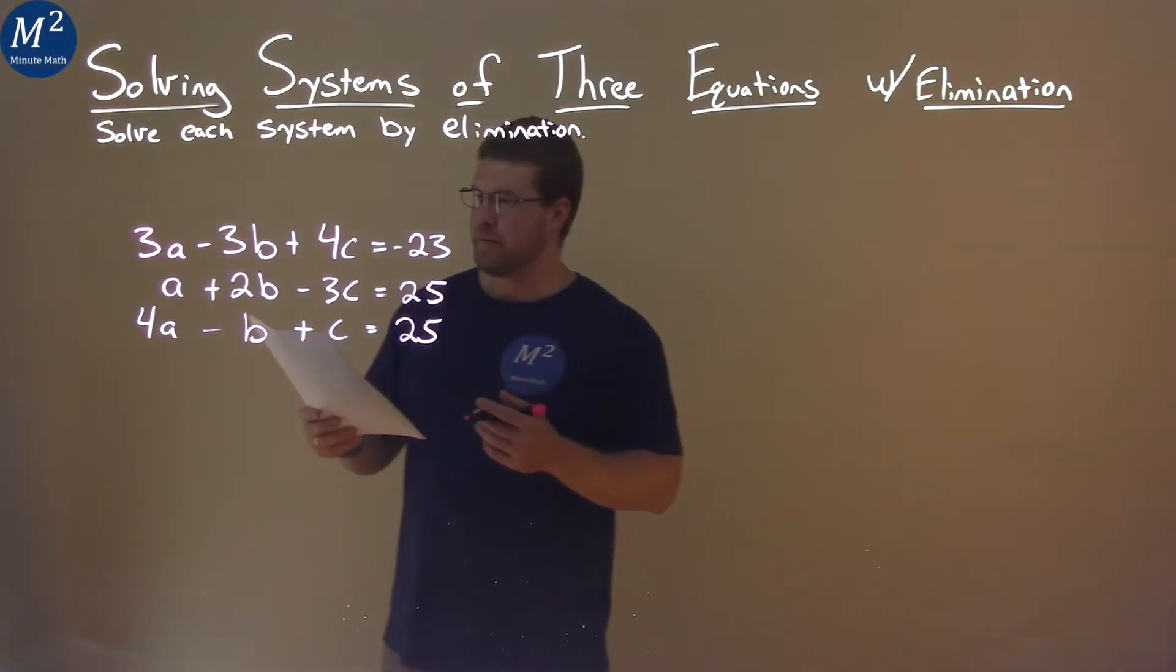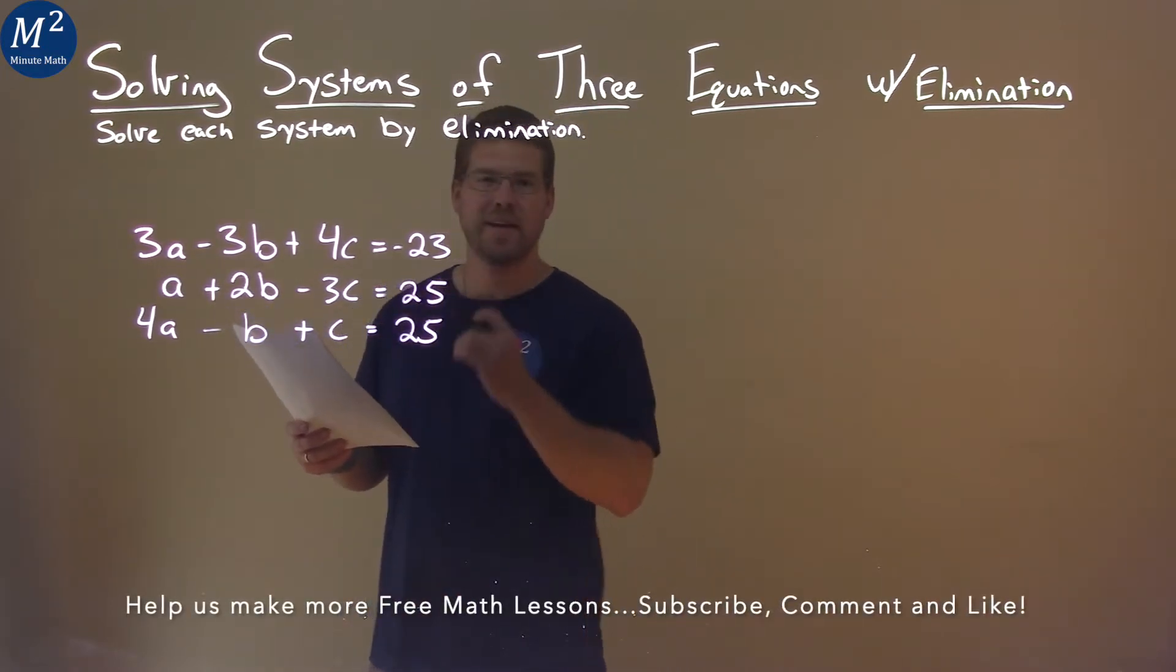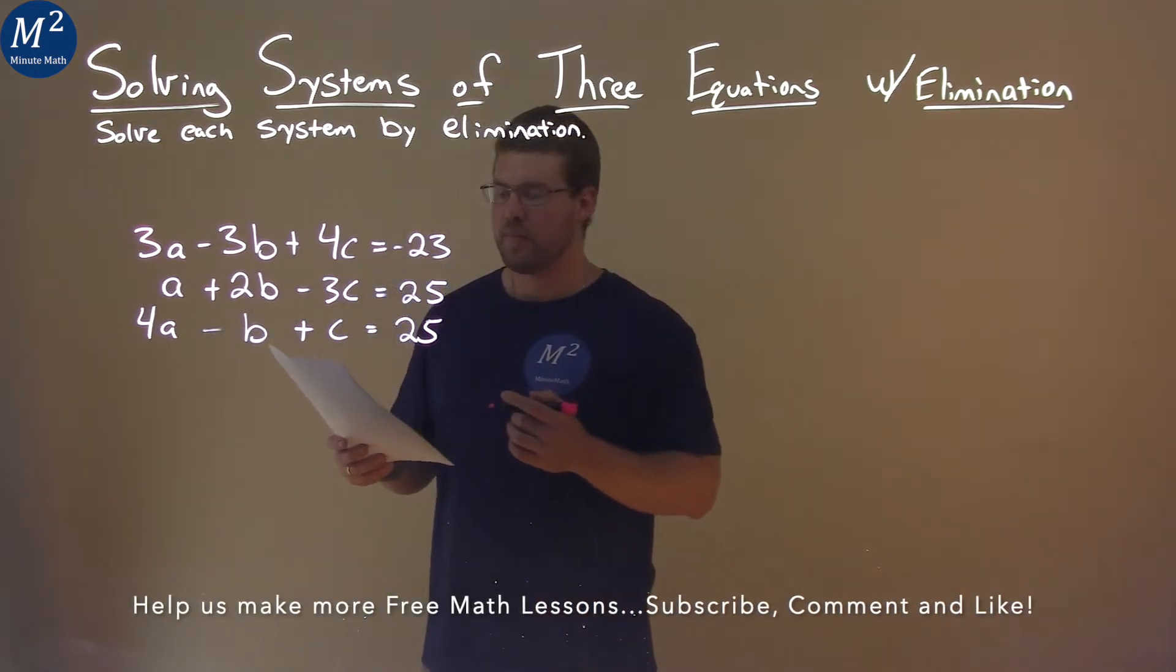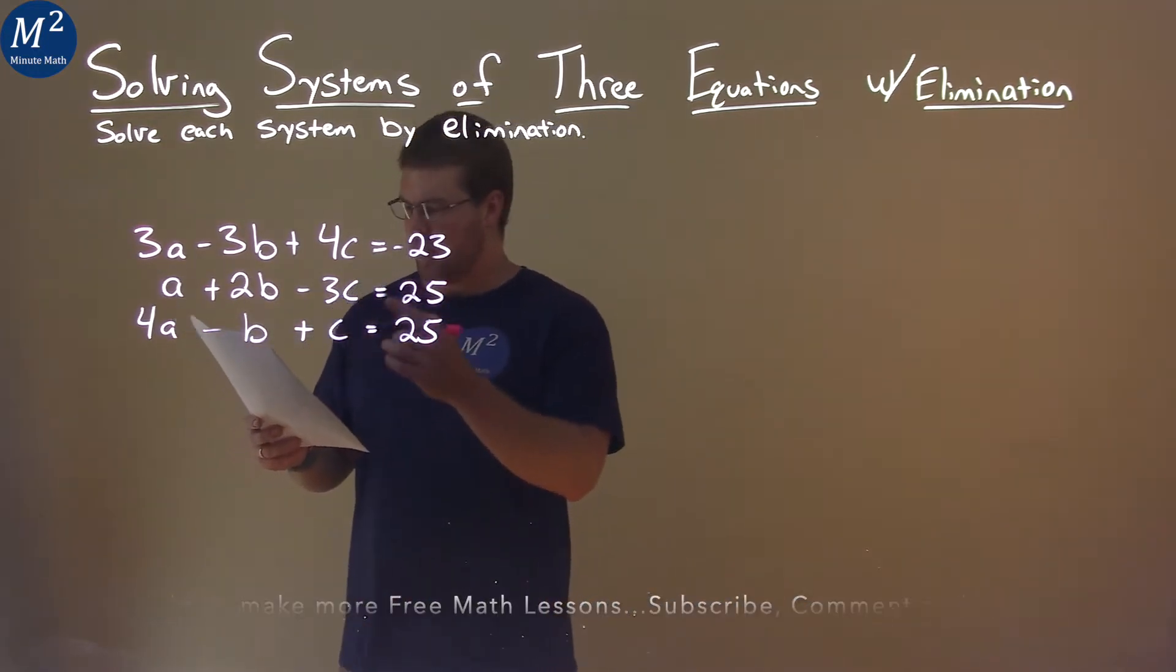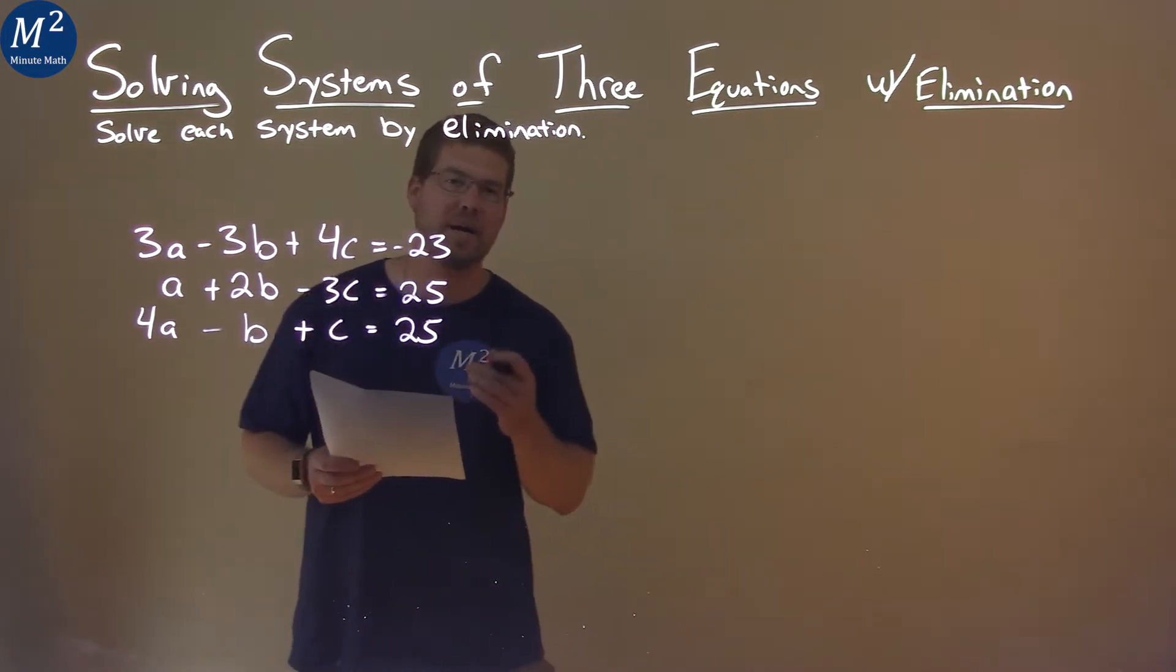We're given this problem right here: 3A minus 3B plus 4C equals negative 23, A plus 2B minus 3C equals 25, and 4A minus B plus C equals 25. We want to solve this system by elimination.